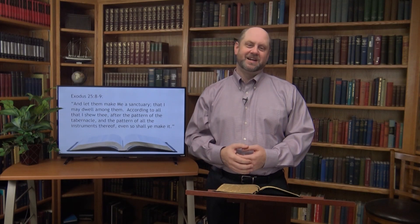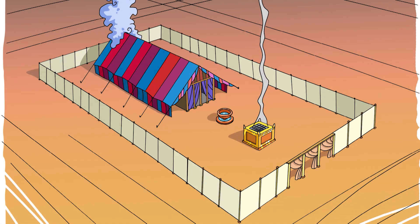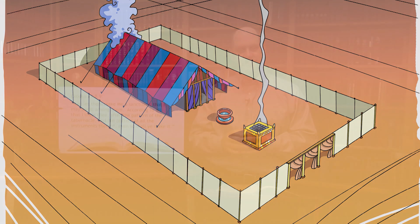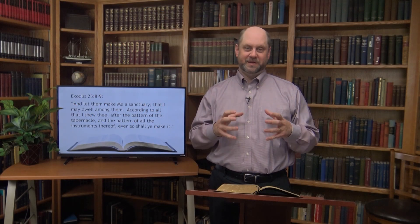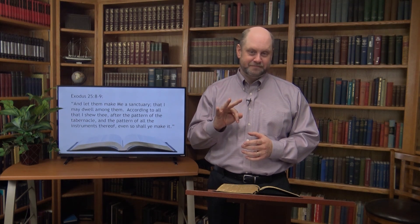The tabernacle was a trinity, and thus it pictures the trinity of the Godhead — three in one. The tabernacle consisted of three parts: the outer court, the holy place, and the holy of holies. The outer court and the holy place each had three things in them. The holy of holies had one thing, but in that one thing there were three things contained in it.